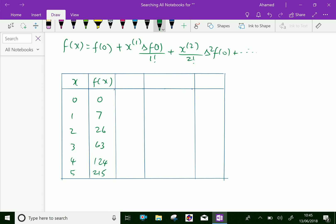Let us do the first difference. Delta f of x equal 0, 7 minus 0 is 7 and 26 minus 7 is 19, and 63 minus 26 is 37 and 124 minus 63 is 61 and 215 minus 124 is 91.